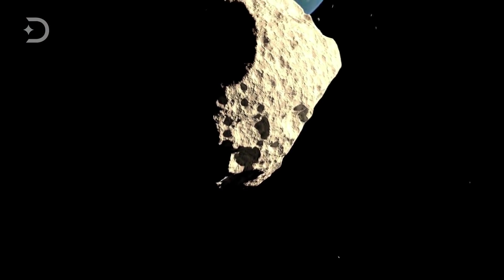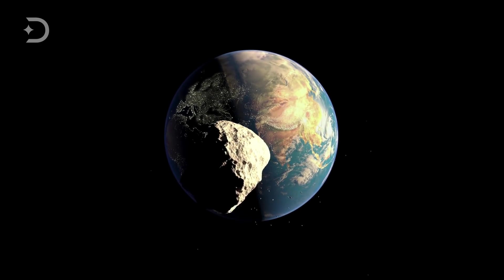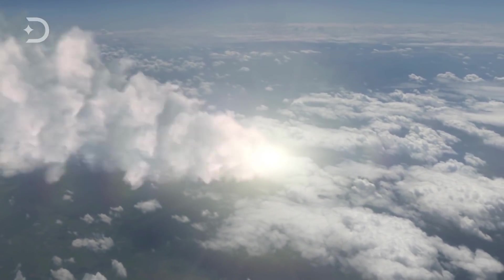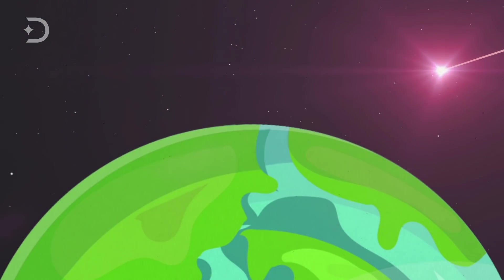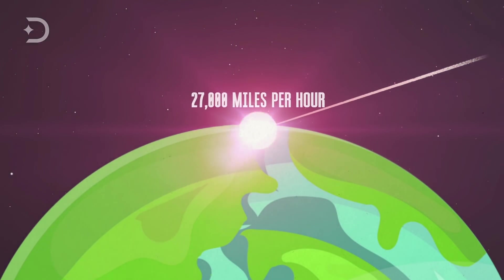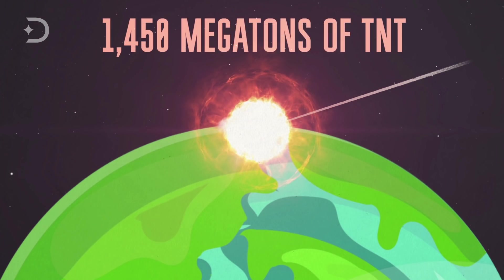But what would happen if Bennu did head towards the planet on a collision course? During atmospheric entry, Bennu would begin to break up at an altitude of 236,000 feet. The mass of the rock would hit the Earth at a velocity of over 27,000 miles per hour, and the impact would release energy equivalent to 1,450 megatons of TNT.